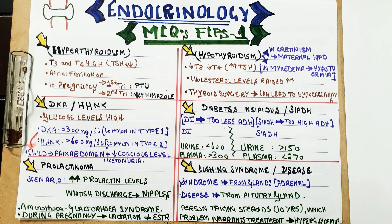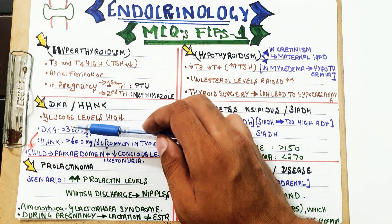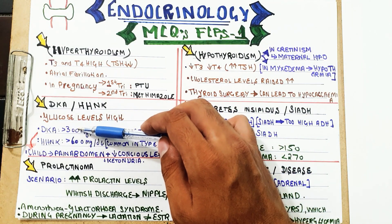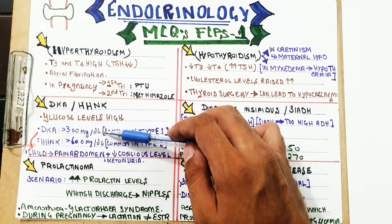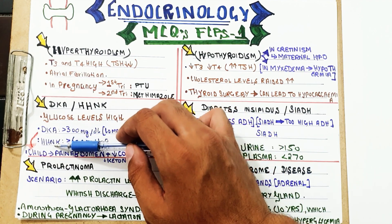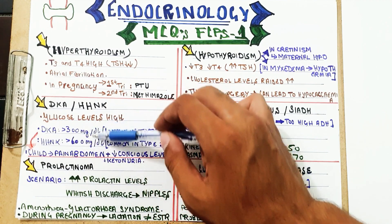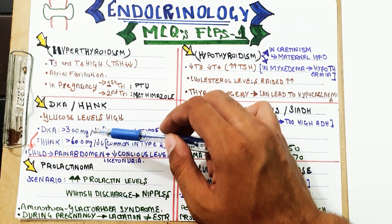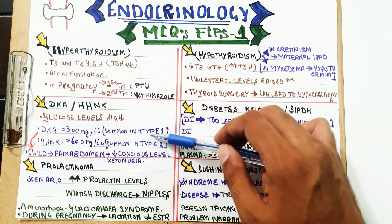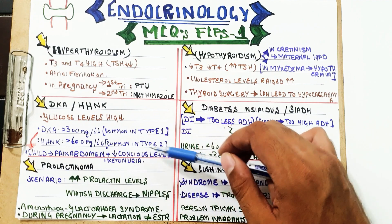Moving on to DKA and HHNK. DKA is diabetic ketoacidosis, occurring mostly when glucose levels are above 300 mg/dL, and it happens mostly in type 1 diabetes. HHNK — hyperglycemic hyperosmolar non-ketotic coma — mostly happens in type 2 diabetes.